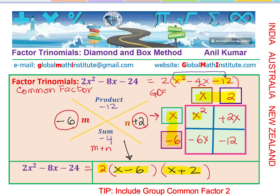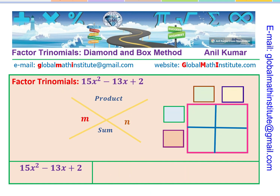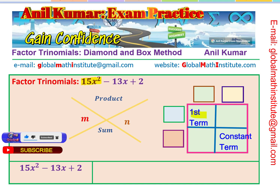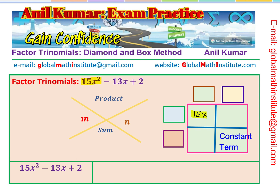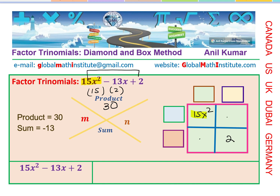The first tip: always check for and factor out a common factor before applying the diamond and box method, or you'll get a wrong result. Now question 2: we have a leading coefficient greater than 1 and no common factor. Place 15x² and constant 2 in the box diagonally. The product is a·c = 15 × 2 = 30, and the sum required is −13.